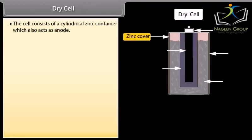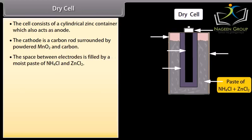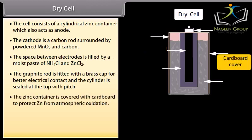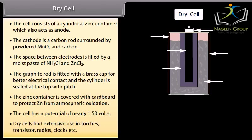Dry cell. The cell consists of a cylindrical zinc container which also acts as anode. The cathode is a carbon rod surrounded by powdered MnO2 and carbon. The space between electrodes is filled by a moist paste of NH4Cl and ZnCl2. The graphite rod is fitted with a brass cap for better electrical contact and the cylinder is sealed at the top with pitch. The zinc container is covered with cardboard to protect Zn from atmospheric oxidation. The cell has a potential of nearly 1.50 volts. Dry cells find extensive use in torches, transistors, radios, clocks, etc.